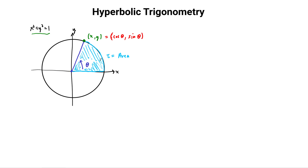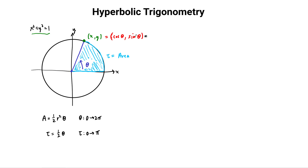The area is obviously related to arc length, which is related to the angle. The area of the unit circle traces out from 0 to pi. The formula for the area of a sector of a circle is one-half r squared theta, as theta varies from 0 to 2pi. With the unit circle the radius is 1, so our tau is actually just equal to one-half theta, and tau goes from 0 to pi. We can then define our trig functions in terms of the area instead of the angle itself.